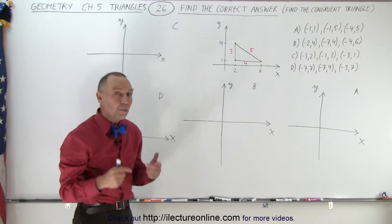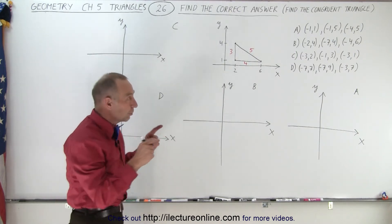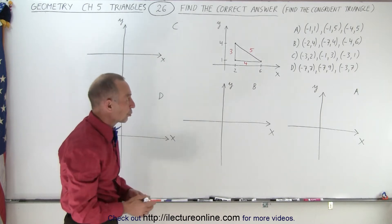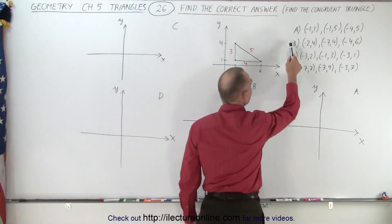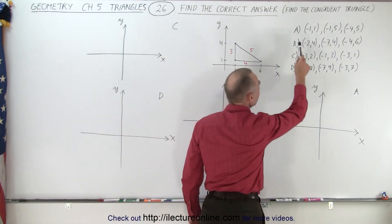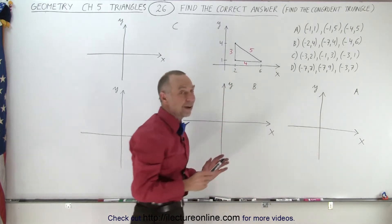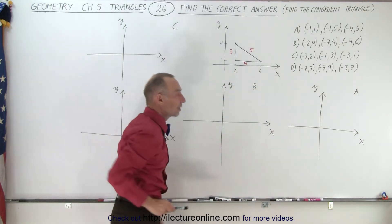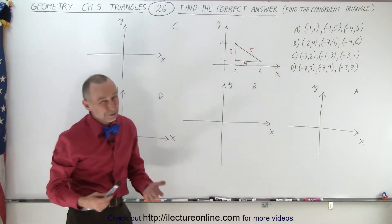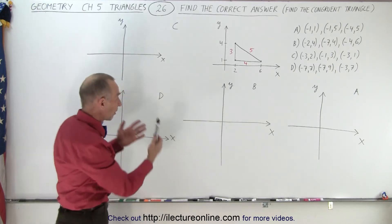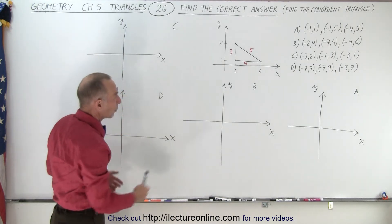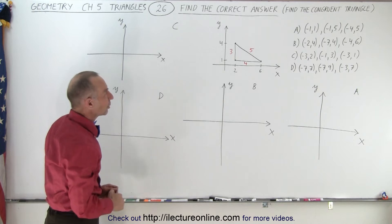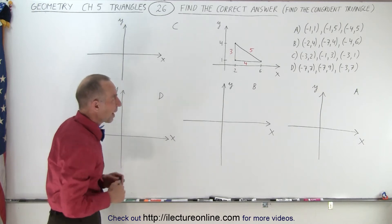Then we're given the coordinate points of the corners of four more triangles — A, B, C, and D — and we're trying to find which of those four is congruent to the given triangle. We'll need to graph those, so I've prepared the whiteboard with four xy coordinates so we can start graphing.